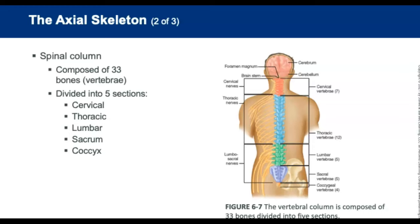The cervical spine is the neck area and has 7 vertebrae — remember: we eat breakfast at 7 a.m. The thoracic spine has 12 vertebrae — lunch at noon. The lumbar spine is the lower back with 5 vertebrae — dinner at 5. The sacrum is the back wall of the pelvis and consists of 5 fused vertebrae. The coccyx, or tailbone, has 4 fused vertebrae — together that's a 9 p.m. snack. The vertebrae are connected by ligaments and protected by the intervertebral discs.